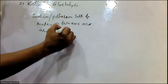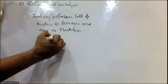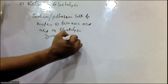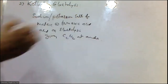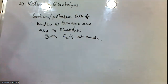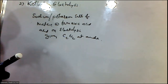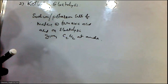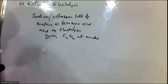On electrolysis, gives acetylene gas at the anode. Sodium or potassium salts of maleic acid or fumaric acid on electrolysis give acetylene gas at the anode.